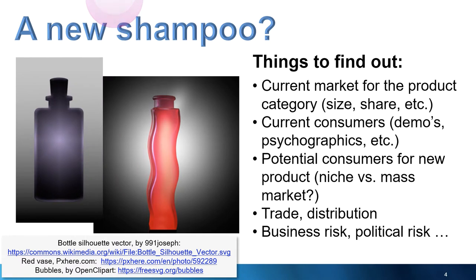Imagine that you're researching the possibility of launching a new shampoo. You'll need to know about the current market for the product, current consumers and their concerns and desires, potential new consumers, and if you're thinking of selling internationally, then also trade logistics and distribution, business risk and political risk, and more.